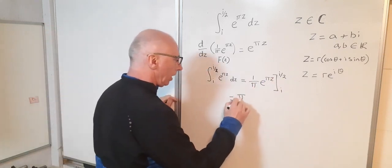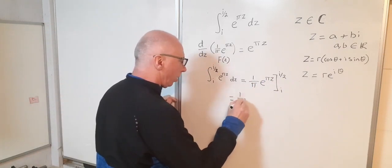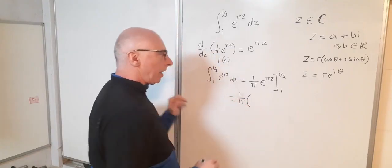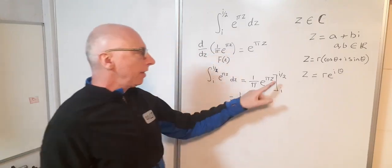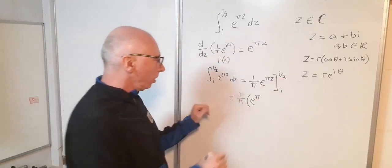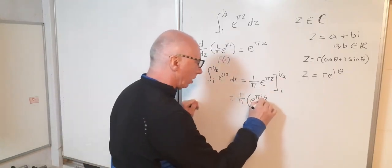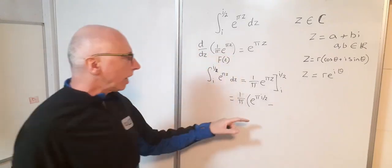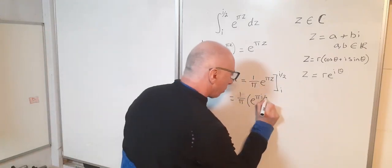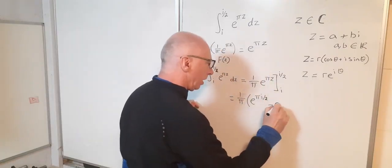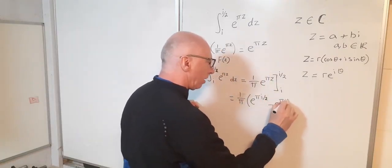So now I've got 1 over pi, e to the pi i over 2. And then now I need to subtract when z equals i, so e to the pi i.